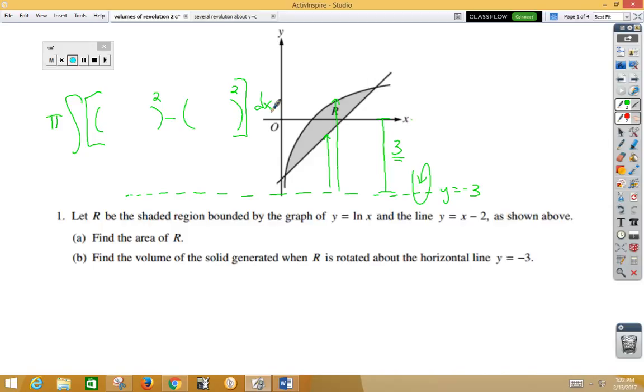My outer radius is the curve natural log x. So I can go ahead and say 3 plus the natural log of x, because we need to add this distance 3 in order to get to the curve. And then I've got 3 plus the line, which is x minus 2. From there, we would want to find our bounds of integration.